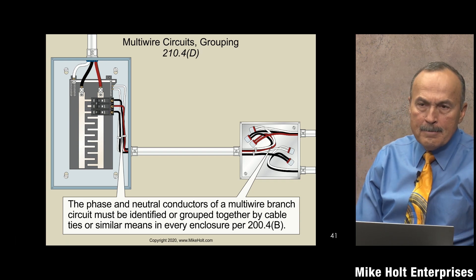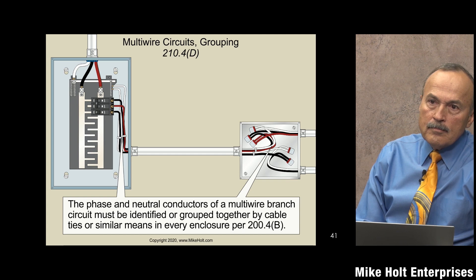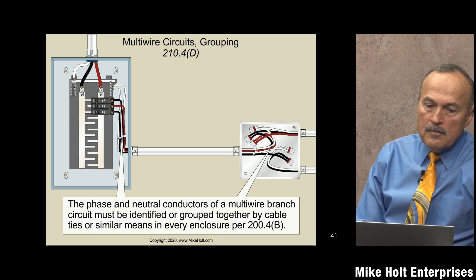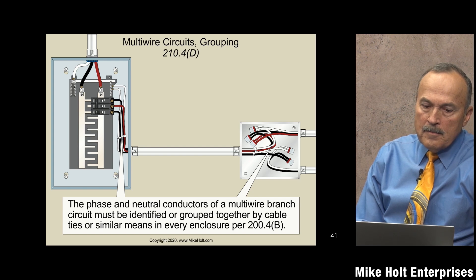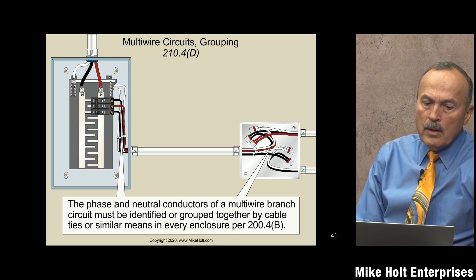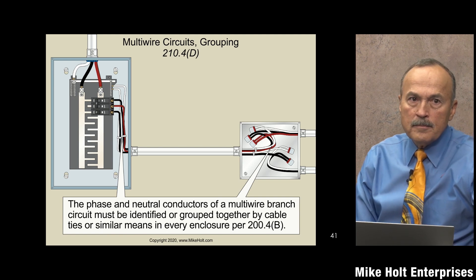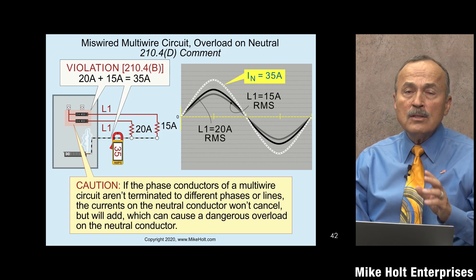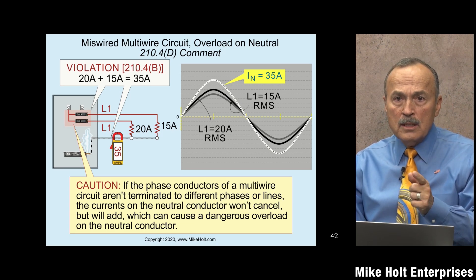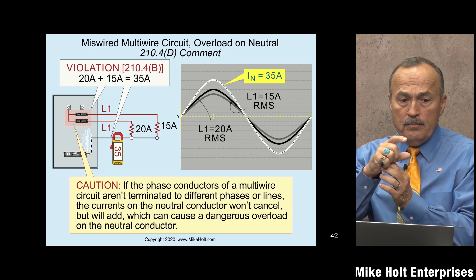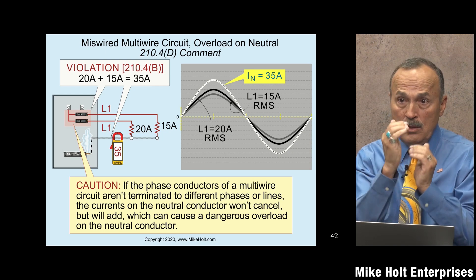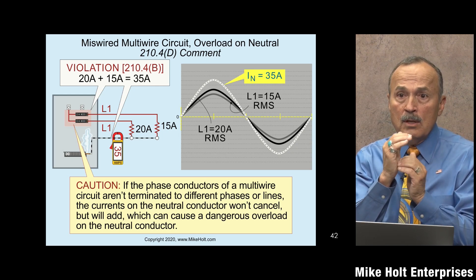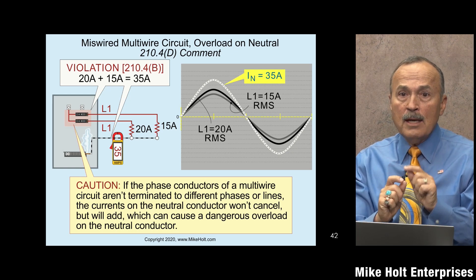To clarify grouping for newcomers: a multi-wire branch circuit is just a circuit, no different conceptually from a non-multi-wire branch circuit — which is exactly why it's important to group the neutral with its multi-wire branch circuit, just as you would group any neutral with its branch circuit. If asked how many circuits are in the panel shown in this example, the answer is two: one multi-wire branch circuit and one regular branch circuit. They must be grouped to prevent hazardous neutral reassignment.